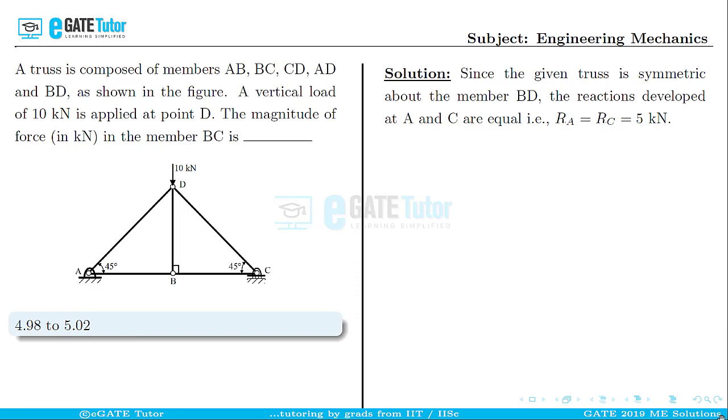The next step is to draw the free body diagram of joint C. From this free body diagram, considering the truss to be in equilibrium,